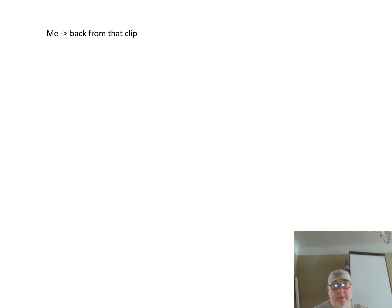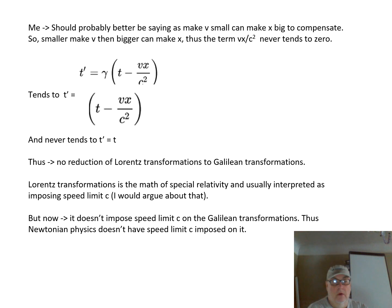So probably be better saying that as I make v small, I can make x big to compensate. So the smaller I make v, the bigger I can make x. Thus the term vx divided by c squared never tends to zero. That means for the Lorentz transformation for time, it tends to t prime equals t minus vx divided by c squared, and it never tends to the Galilean transformation of t prime equals t. Thus there's no reduction of Lorentz transformations to Galilean transformations.